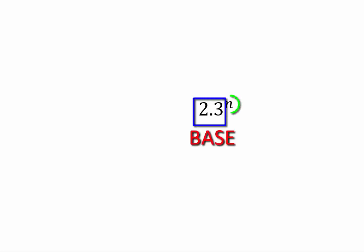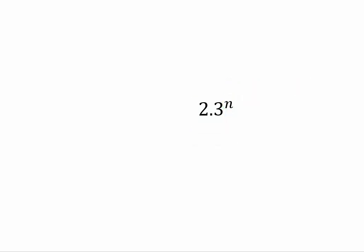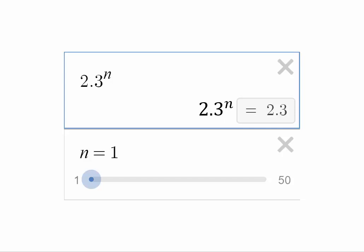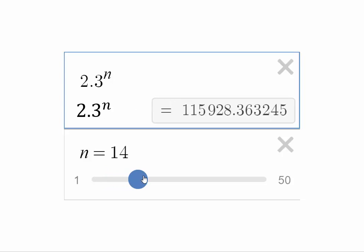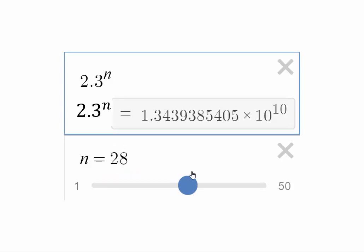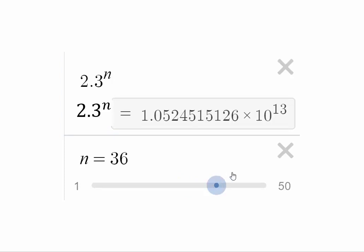Let's make sure you can read this: 2.3 is the base and n is the exponent, so we have 2.3 to power n. Starting with numbers bigger than one, let's set n equals 1, 2, 3, 4 and look what happens. You can see the numbers keep getting bigger and bigger. This tells us that if you have numbers bigger than 1 and raise them to powers greater than 1, the numbers just keep on getting larger.